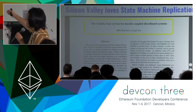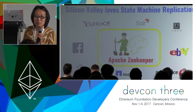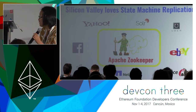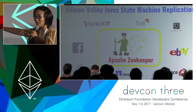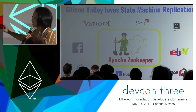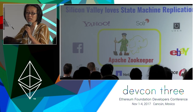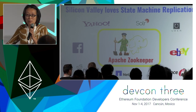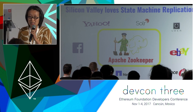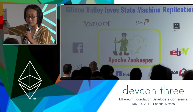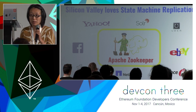Whatever Google does, every other Silicon Valley company copies, and that's why we have an open-source counterpart called Apache ZooKeeper. Pretty much every company in Silicon Valley apart from Google implements Apache ZooKeeper.